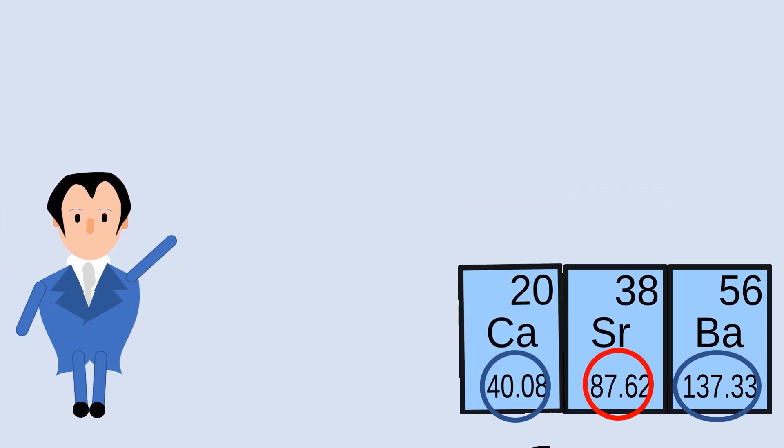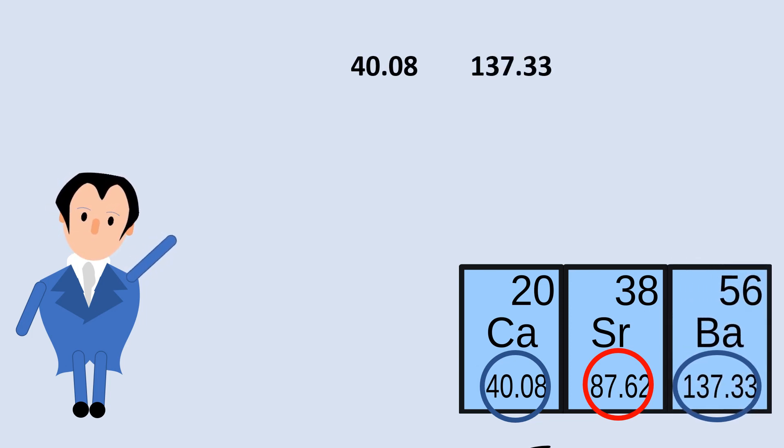The atomic weight of Calcium is 40.08. The atomic weight of Barium is 137.33. The arithmetic mean of these becomes 88.705. The element that has atomic weight closest to this is Strontium. Hence, Calcium, Strontium and Barium are put in one triad.